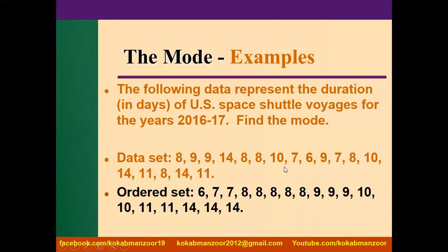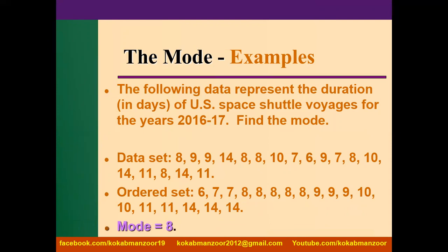Once arranged in ascending order: 6, 7, 7 — we have two 7s here. Then 8, 8, 8, 8, 8 — five 8s. Then 9, then 10, then 11 and 14. So it's very simple and evident. You can see 8 is the most frequently occurring value, appearing 5 times. All the other values are occurring less than that. So 8 is our mode. Simple, right? I hope you got the concept.